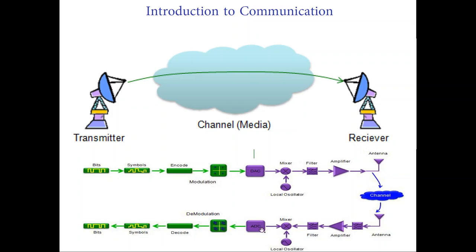Then you convert from analog to digital so that it can be processed by computers and phones, and finally you receive your message, voice, video, picture, or whatever. So basically this is a rough explanation of what communication systems are: the transmitter, the receiver, and the channel effects on your message.